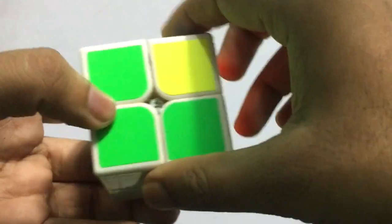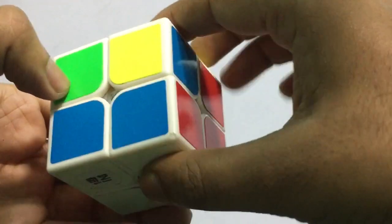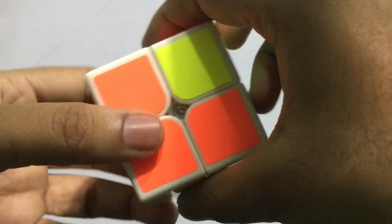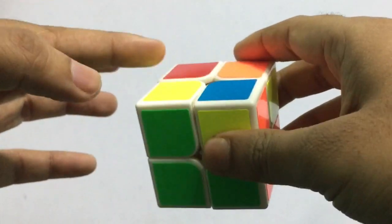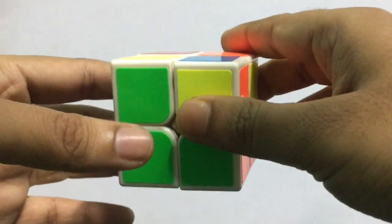How you complete this top layer is you just have to memorize a move. The move consists of having the yellow part on your left side and then performing the moves.